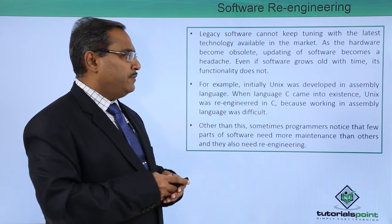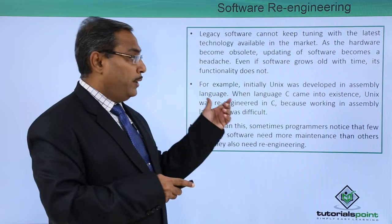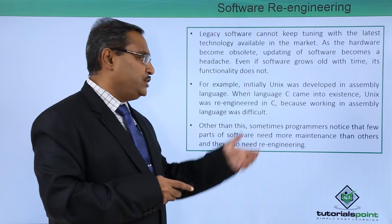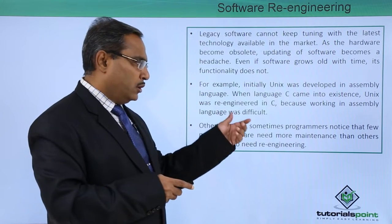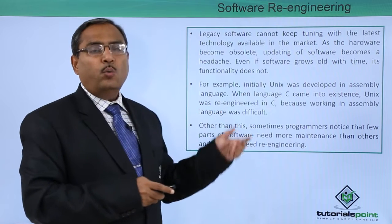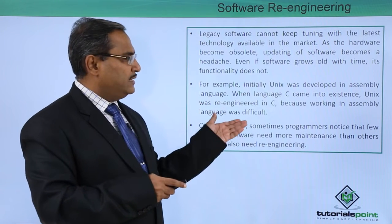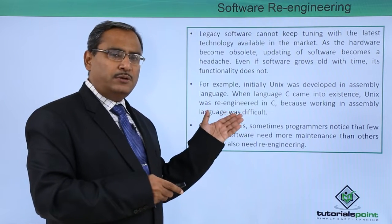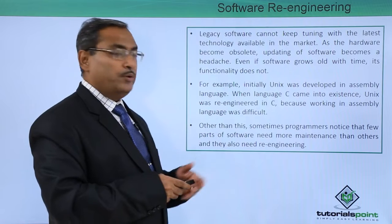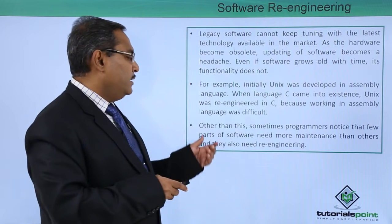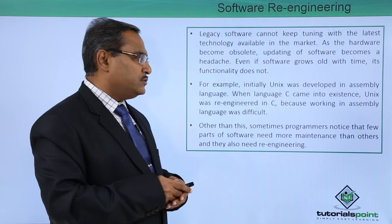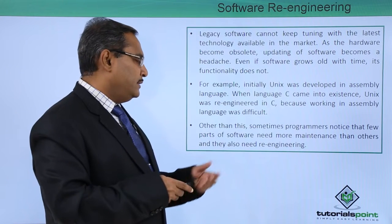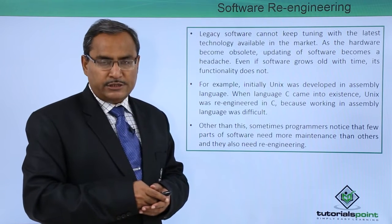For example, initially Unix was developed in assembly language, but when the C language came into existence, Unix was re-engineered in C language because working in assembly language was difficult. The same Unix written in assembly language code migrated to C language, and for this we required re-engineering. Sometimes programmers also notice that few parts of the software need more maintenance than others, and they also need re-engineering.